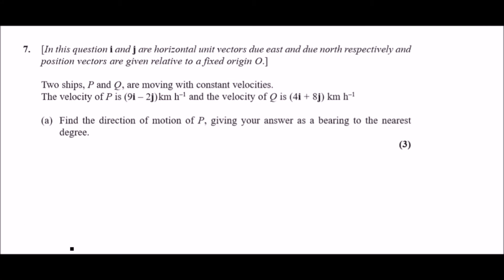Two ships P and Q are moving with constant velocities. The velocity of P is 9i minus 2j, and the velocity of Q is 4i plus 8j, both measured in kilometers per hour. Make sure we remember that for a later question. For this one we just need to figure out how to calculate the direction of motion of P given as a bearing.